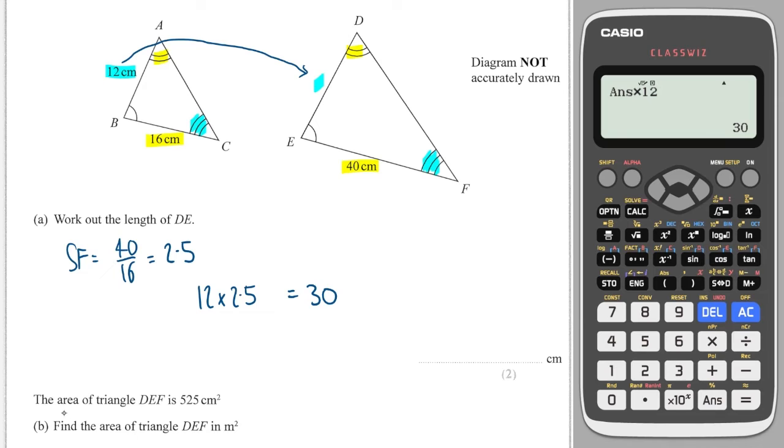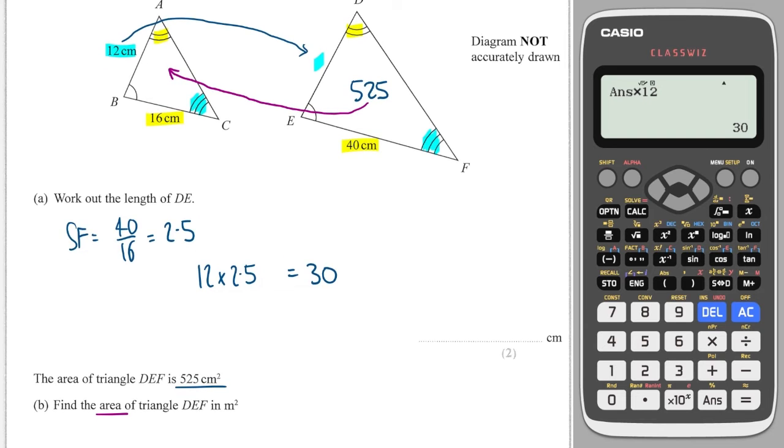This makes this question slightly trickier. We get told the area of DEF is 525. I need to work out the area of the other triangle. If I'm going backwards, I'm going to be dividing. But because we're talking about area, which is in the second dimension, I have to take the scale factor and I have to square it. So I'll need to do 525 divided by the scale factor, 2.5 squared, because we're converting between area. So we have to square the scale factor. That gives me 84.